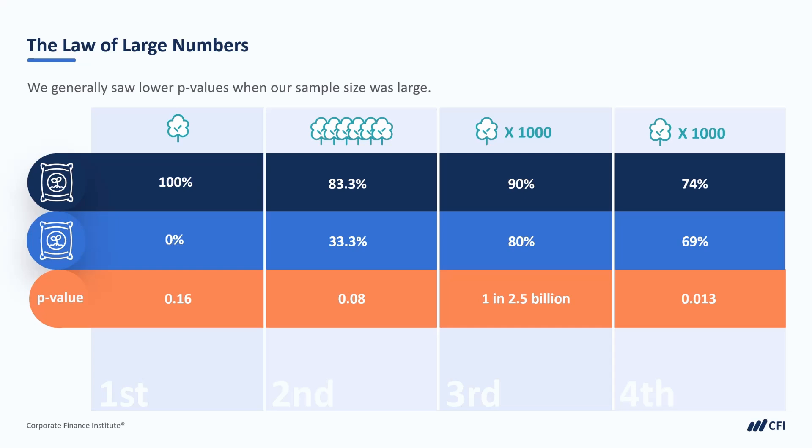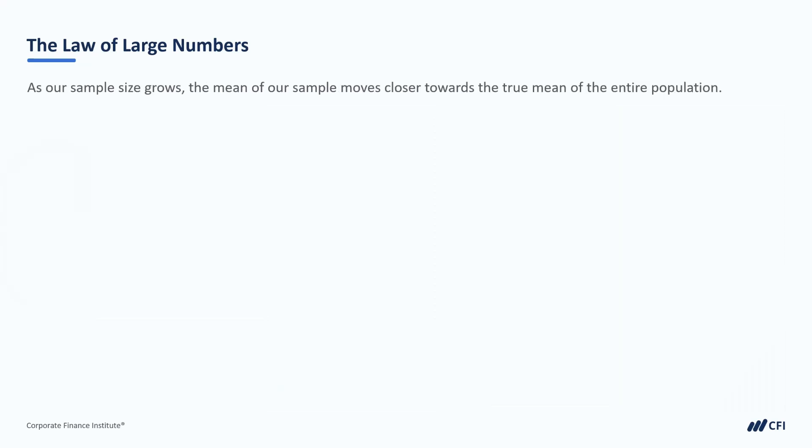To understand why, you need to remember the law of large numbers. This law states that as our sample size grows, the mean of our sample moves closer towards the true mean of the entire population. Essentially, the more observations we have and the larger our samples, the less likely it is that we get fooled by randomness.